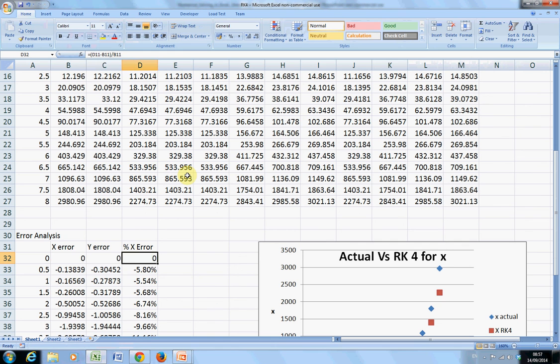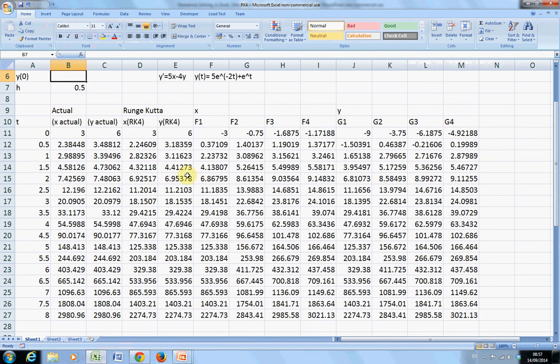I just drag that down. D11 minus B11. Drag that down. That's D12 minus B12. So I'll get an error there.